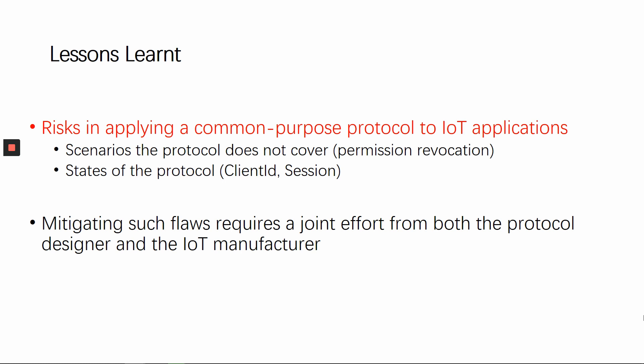The most important lesson learned from our study is the caution one should take when applying a common-purpose protocol to domains that may involve malicious parties. In such a case, both the scenarios the protocol does not cover and the individual states of the protocol need to be evaluated to identify the gap between what the protocol can protect and what needs to be protected. More specifically, in the use of general messaging protocols for IoT device-user communication, our study highlights that not only should client ID and its related states be safeguarded with proper authentication and authorization, but also the whole revocation process — which is security critical — needs to be added to the protocol with protection in place. Mitigating such flaws requires a joint effort from both protocol designers and IoT manufacturers. That's all. Thank you.